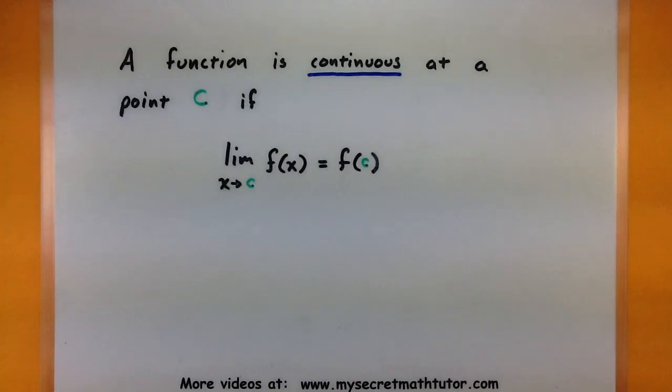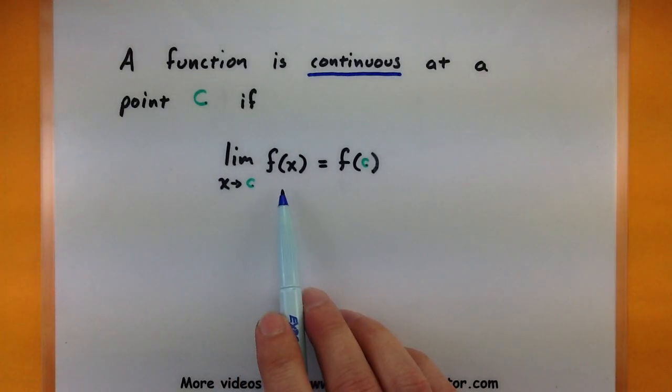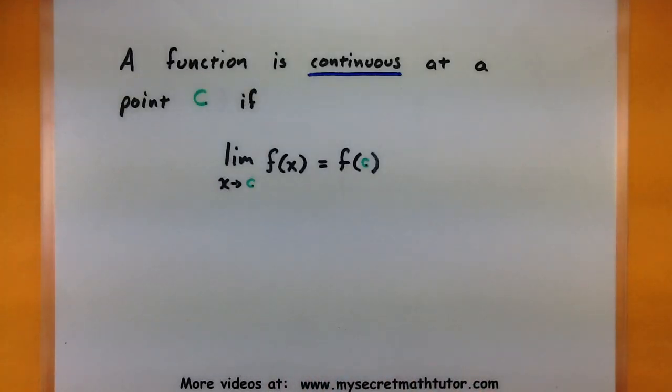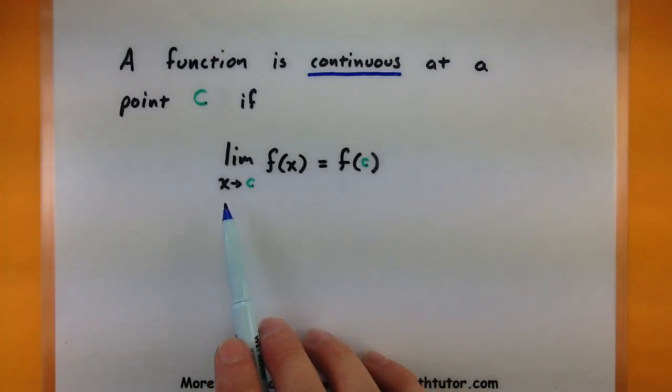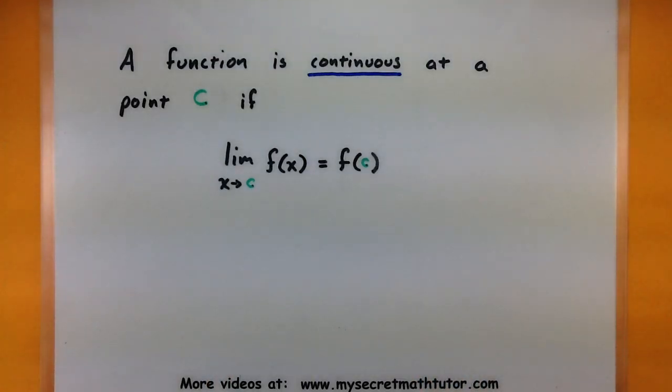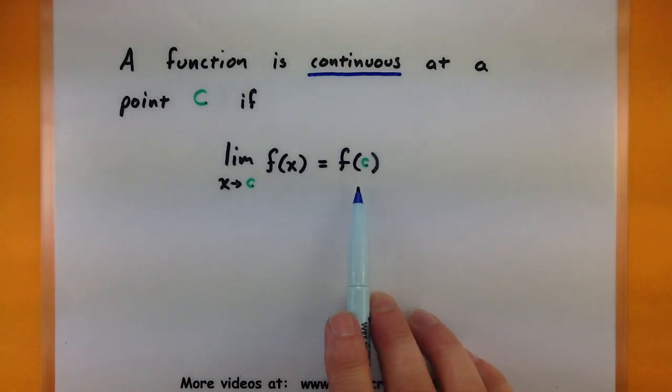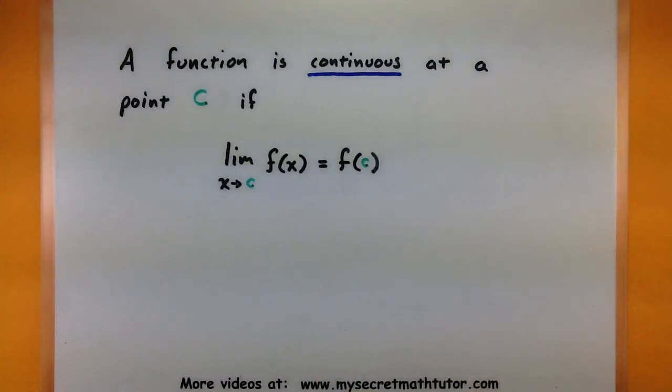A function is said to be continuous at a point C if the limit as X approaches C of that function is equal to f of C. Now this is kind of a weird definition so let's explain what's going on here. What we have is that we're looking at the limit of a function as X is approaching a value C, and what we're seeing on the right side is that we're simply plugging that C value in.